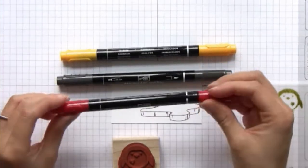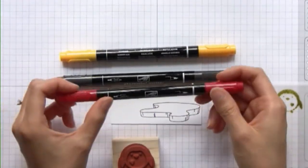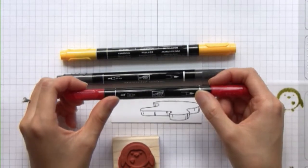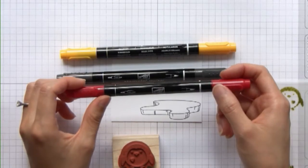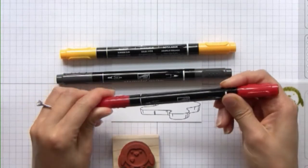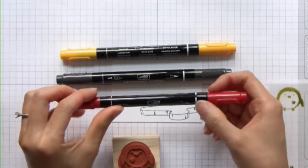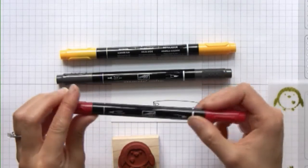These are dual-tipped markers so you have a fine tip on one side and a brush tip on the other. They're really great if you want to perfectly match your project with writing on the inside, and then you can use the brush tip to color your stamps.